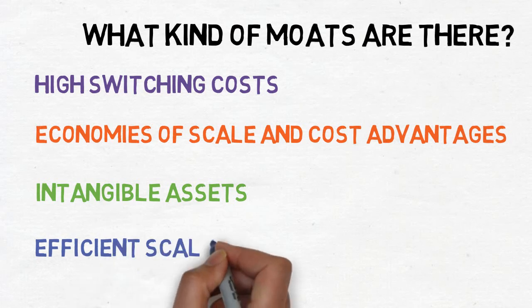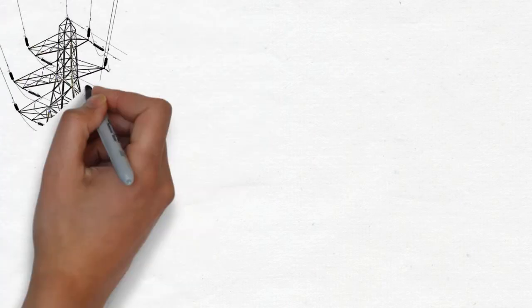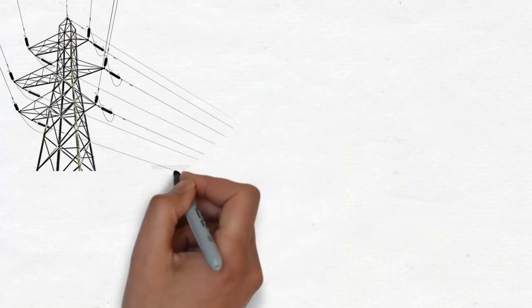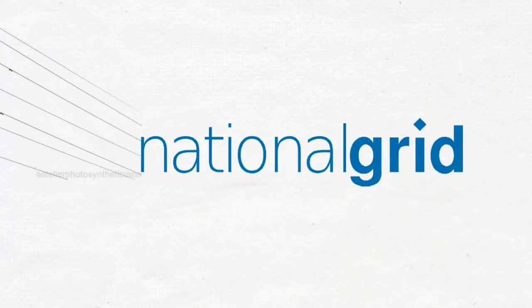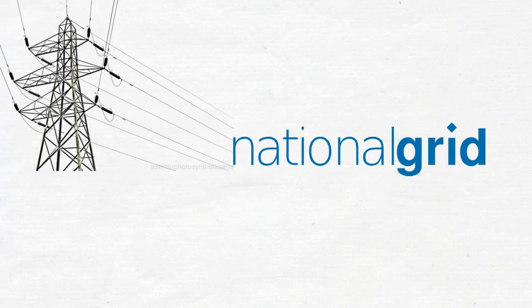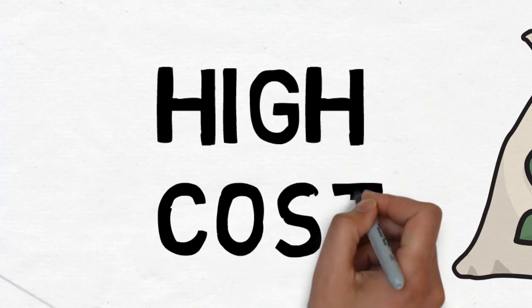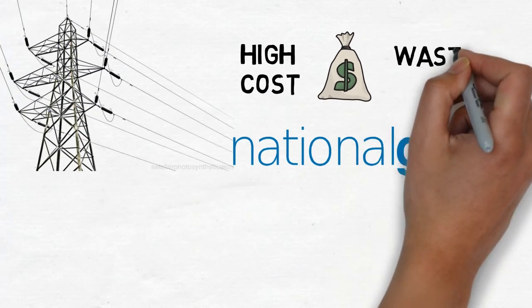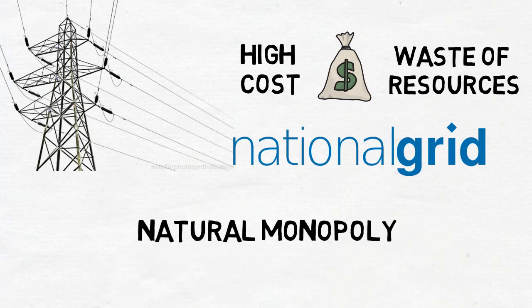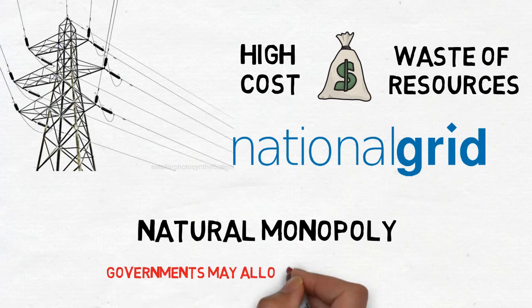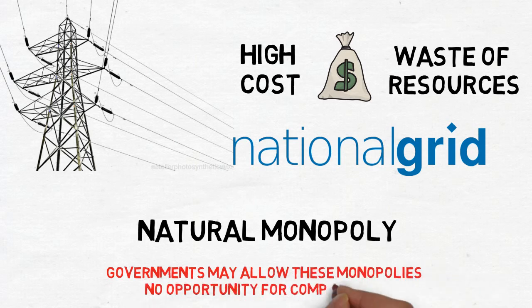The last type of moat we will cover on this video is efficient scale. If an industry is set up in a way that it only makes sense for one or only a small number of companies to operate, then it will be harder for new entrants to enter the market. This type of moat was my justification for buying National Grid. It is extremely costly and unnecessary for new competitors to enter the market for distributing energy. It will cost a lot to set up the new infrastructure and it will be a waste of resources. In these kinds of natural monopoly industries, it's unlikely that a new competitor would enter the market unless the incumbent firm was doing a truly dismal job.